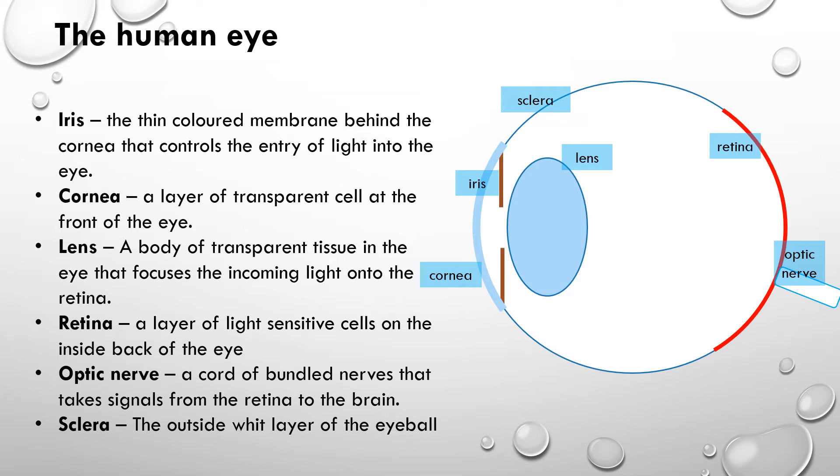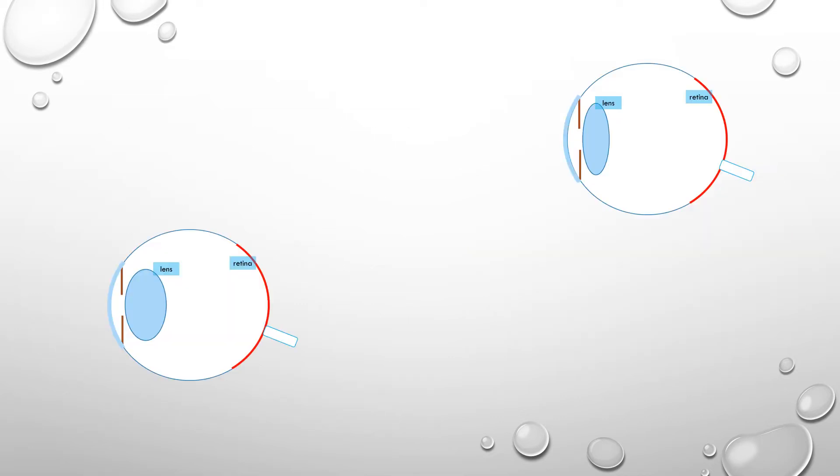Right, so how does the lens work? Well, the lens has to deal with a couple of different situations. It has to deal with us looking at far away objects. So human beings evolved on the plains of Africa. They had to look long distances to look out for predators and food, so our eyes need to be able to look at long distances.